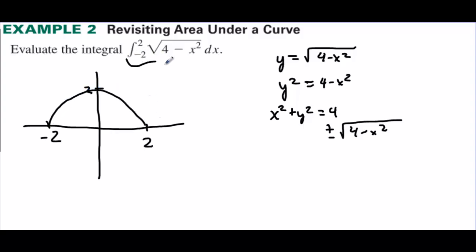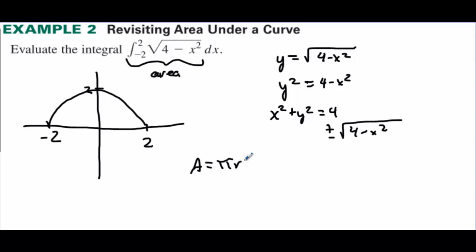So we're finding the area under the curve of the top half of a circle with radius two — the area above the x-axis and below the circle. We know the area of a circle is pi r squared. So the area equals pi times two squared. The radius is two, so the answer is four pi. But we only want the half circle, so the answer is two pi.